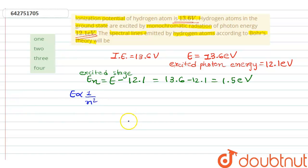So we can write En equals I.E. over n squared. Here En is 1.5, I.E. is 13.6 over n squared. So n squared equals 9, therefore n equals 3.